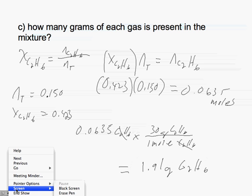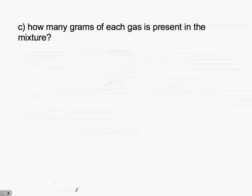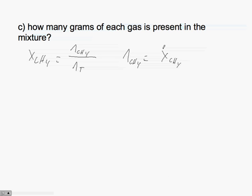To get the number of grams of the other one, we would do the same thing. We would have our mole fraction of C2H4 is equal to the moles of C2H4 over the total moles. We know that moles of C2H4 would be equal to the mole fraction of C2H4 times the total moles.